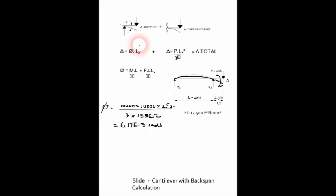And then we can calculate the deflection from that, which is simply the rotation times the cantilever span. So we'll assign that as the deflection due to rotation, and that is equal to 6.17 times 10 to the minus three, which is the rotation, times the cantilever span 2500 in millimeters.